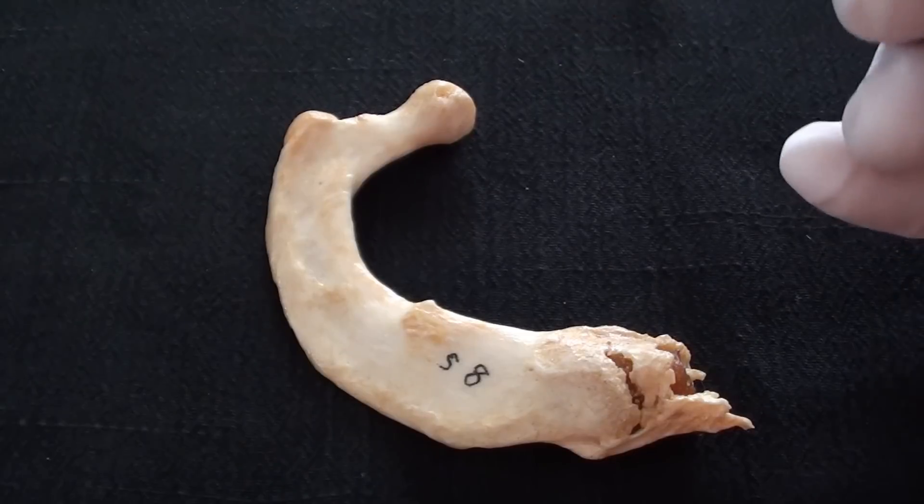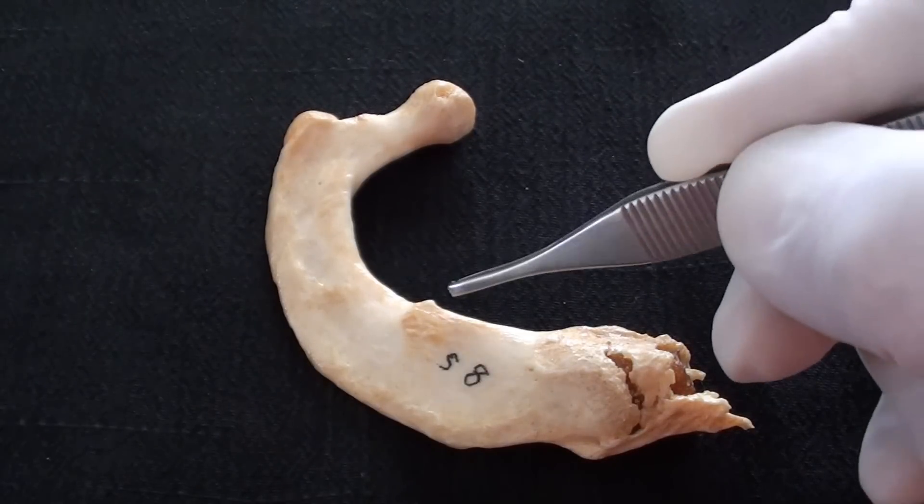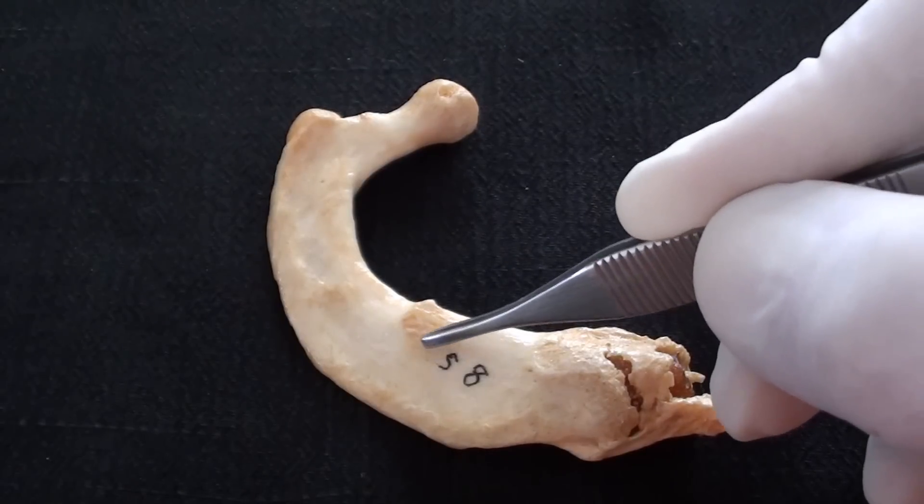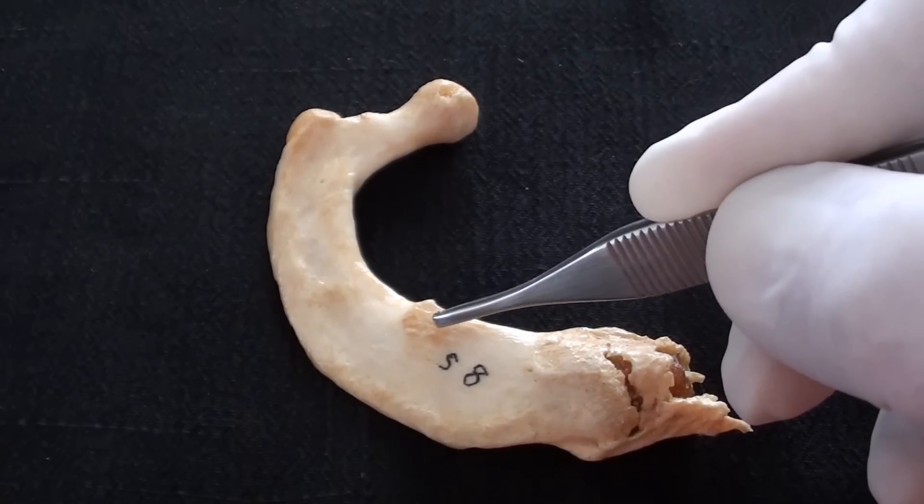On the superior surface of the rib, the most prominent finding is this elevation that is known as the tubercle of the anterior scalene muscle.